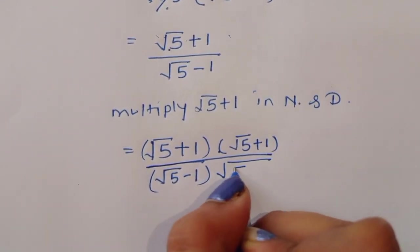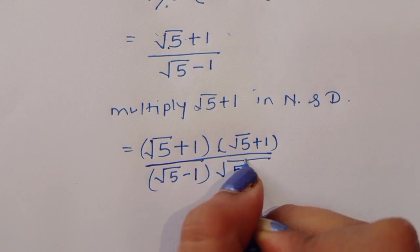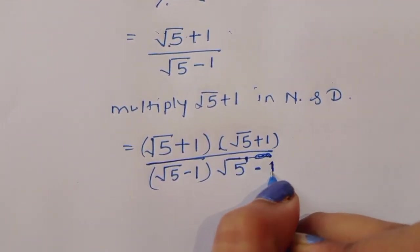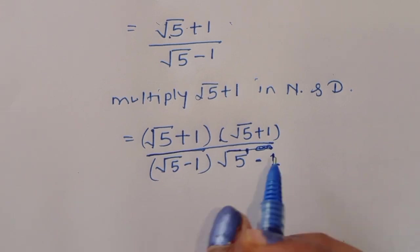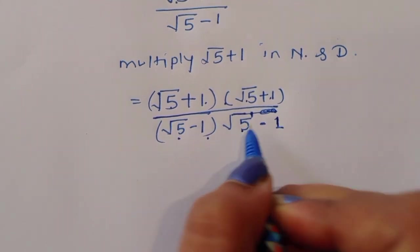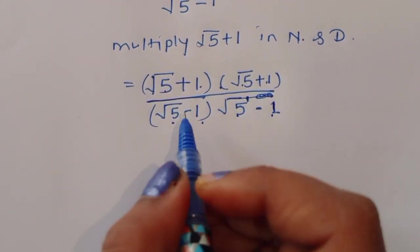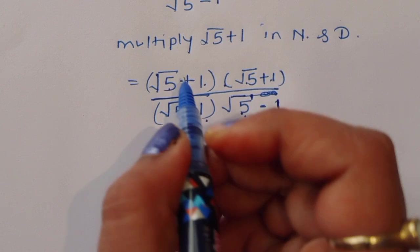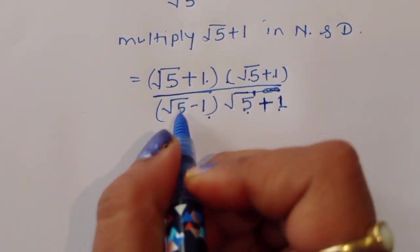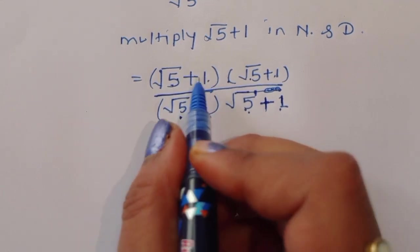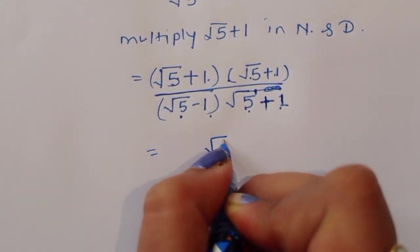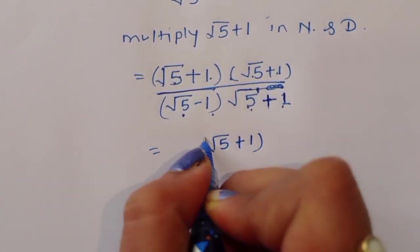Now you can see we have square root of 5 plus 1 and square root of 5 minus 1. In the denominator we have a minus b times a plus b. In the numerator we have square root of 5 plus 1 whole square, which uses the formula a plus b whole square.